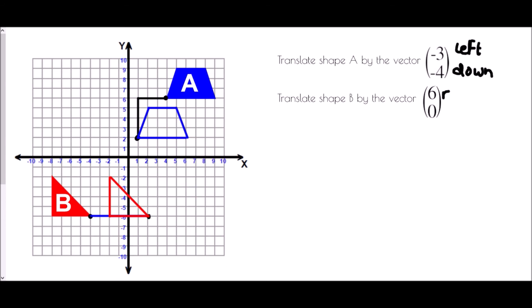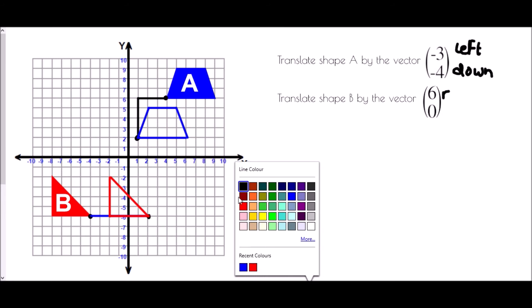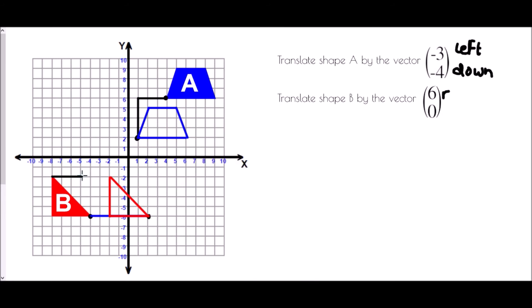We can check: every point has moved six spaces. Using this corner — one, two, three, four, five, six — and this corner — one, two, three, four, five, six. Every corner on the shape has moved six spaces to the right.